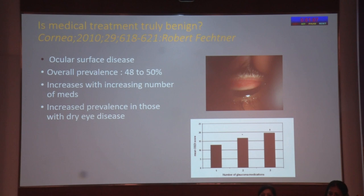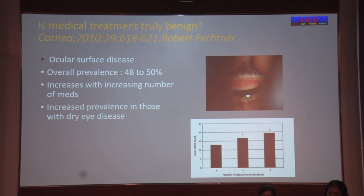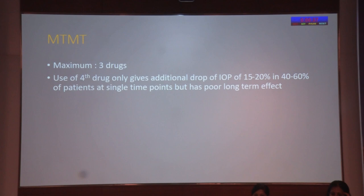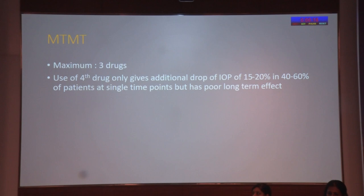But is medical treatment really benign? Many patients over time develop ocular surface disease, which can occur in up to 48–50% of cases, increasing with the number of medications used and with greater prevalence in elderly patients with dry eye disease. Preservative-free medications are now available and have been found to be as efficacious as preserved medications. Regarding maximum medical treatment: this is the minimum number and concentration of drugs that give the maximum drop in IOP with the least side effects — usually a maximum of three drugs. A fourth drug gives only an additional IOP drop of 15–20% in 40–60% of patients at single time points with poor long-term effect. Once a fourth medication is needed, the patient should be informed that the next step — laser trabeculoplasty or surgery — will be required depending on the individual scenario.